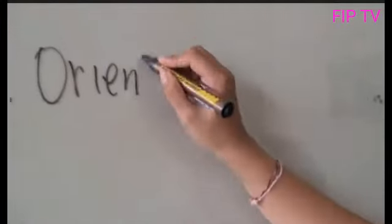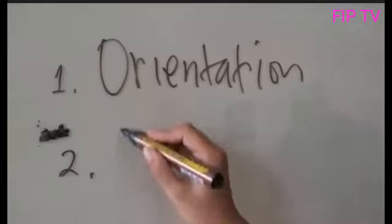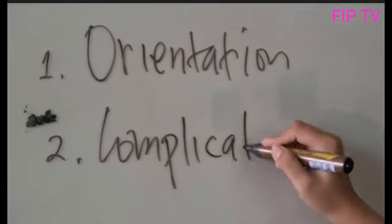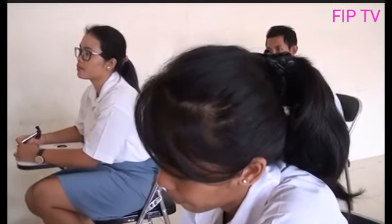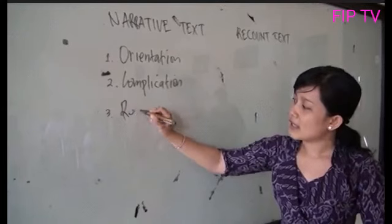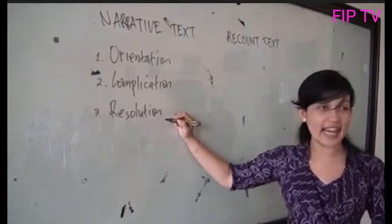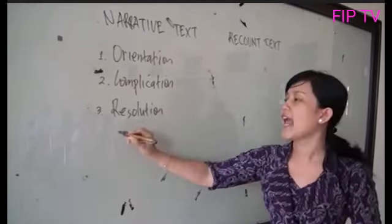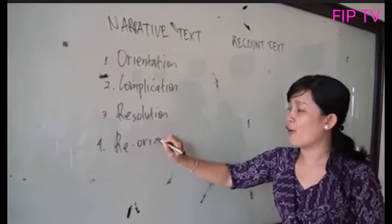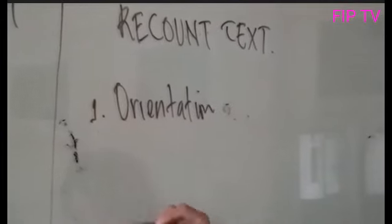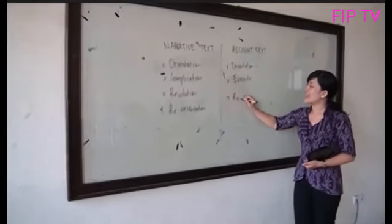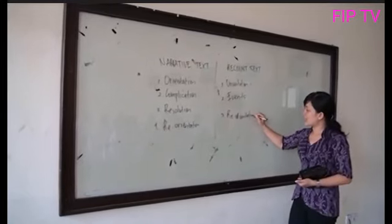The second part is complication, which is the problem of the story. The third is resolution — how to solve the problem in the complication. And the last one is reorientation. For recount text, the structure is different: the first is orientation, the second is events, and the last is reorientation. So in recount text, there is no problem.